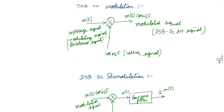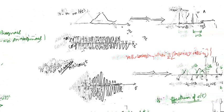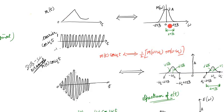Now let us look at the spectrum of the message signal and the modulated signal. We know the relationship between the time domain and the frequency domain. I have made a separate video on Fourier transform; the link is in the description. I am taking a message signal m(t) whose spectrum M(ω) is given. From the spectrum we can see the positive frequency goes from 0 to 2πB, so the bandwidth is 2πB radians per second.